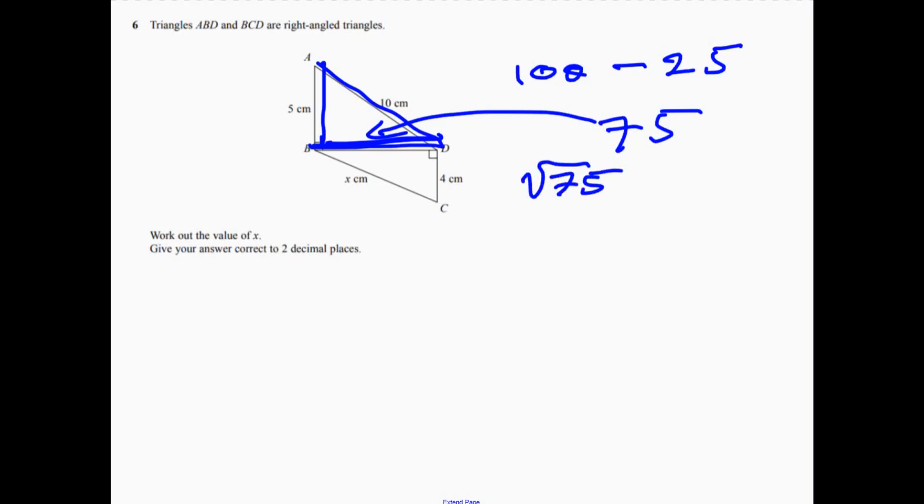Now I've got that one there is 75, now I can work out what x is. It's just like doing double Pythagoras, but this time it's an add one.